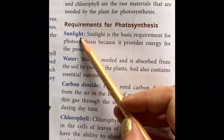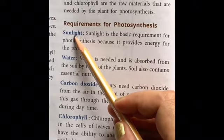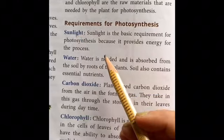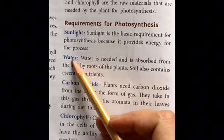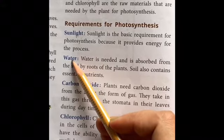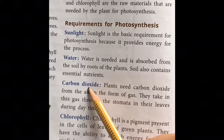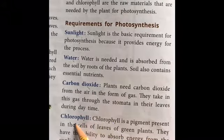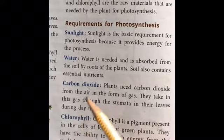The first requirement is sunlight — this is an extremely important element in photosynthesis. Then they need water, which they get from the soil. Then carbon dioxide from the environment, from the different gases available in our atmosphere. And chlorophyll, which is already a pigment present in their leaves.